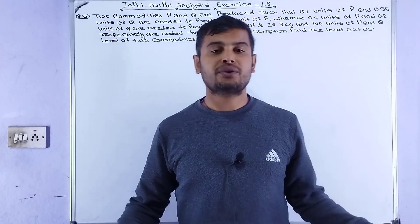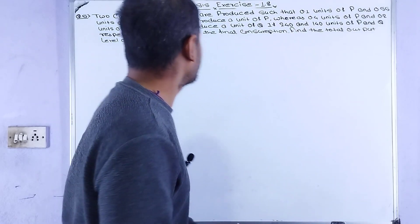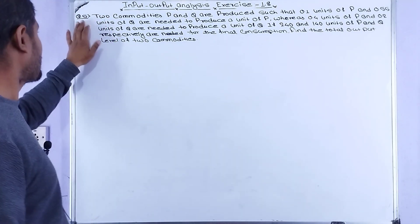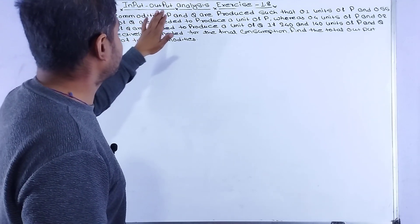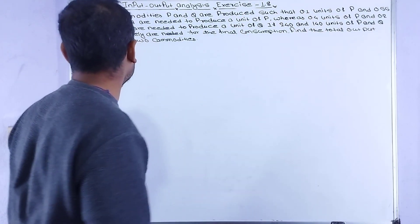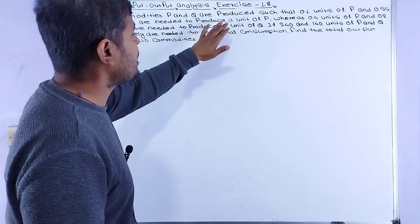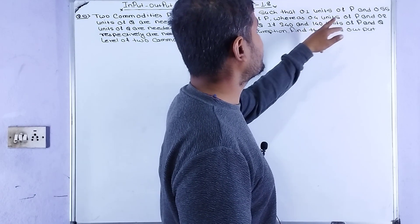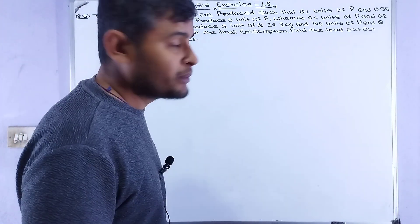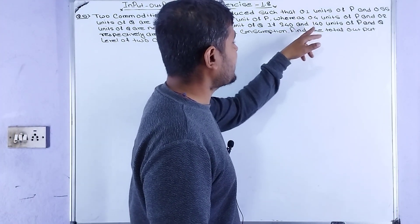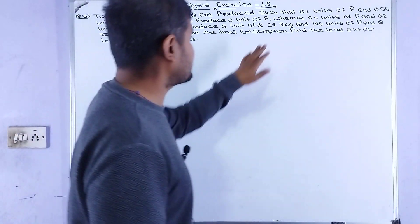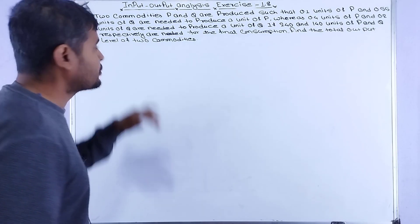Hello students. In this video we are doing input-output analysis exercise 1.8, question number five. The question states: commodities P and Q are produced such that 0.1 units of P and 0.55 units of Q are needed to produce a unit of P, whereas 0.4 units of P and 0.2 units of Q are needed to produce a unit of Q. If 240 and 140 units of P and Q respectively are needed for final consumption, find the total output level of the two commodities.